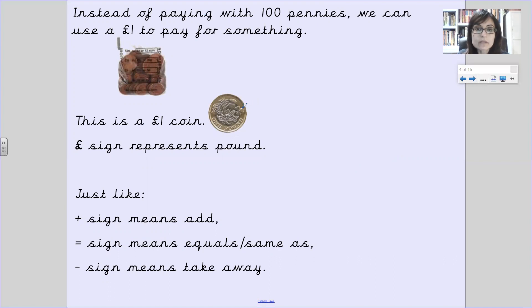This is a one pound coin. And we use this sign, which we can write like, it's a bit tricky sometimes. Go around the loop and two lines across. It's a little bit tricky. You can practice that one later. So just like the plus sign means add, the equal sign means equals or the same as. And you've got the takeaway sign, which means take away or subtract.